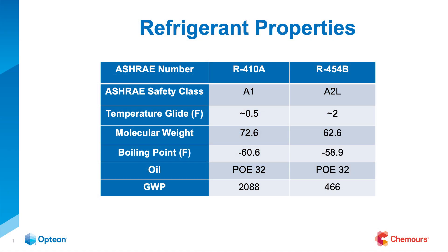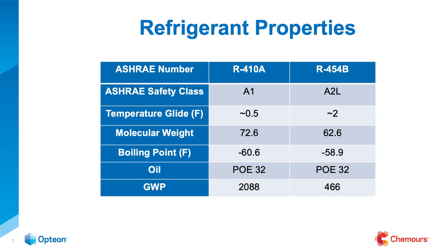If we put some of the properties that are always of interest when comparing refrigerants up here, you can see some are very similar with some changes. Things like molecular weight, boiling point, materials compatibility, lubricant recommendations, and temperature glide are all going to be very similar in handling and performance. The cases where you'd need to do anything drastically different from 410A are going to be minimal.